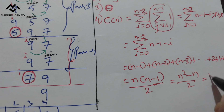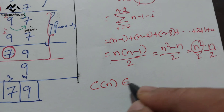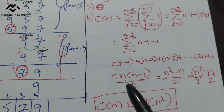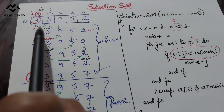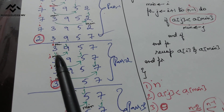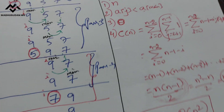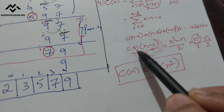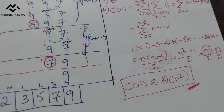This series sums to n(n-1)/2, which equals n²/2 minus n/2. The most dominating term is n², so C(n) belongs to Big Theta of n². The time complexity is in the order of n². To verify: for n=5, 5×(5-1)/2 = 5×4/2 = 10. Counting the comparisons made in our example gives exactly 10. This confirms the time complexity.